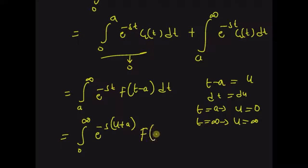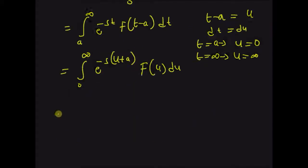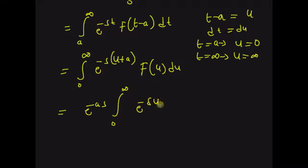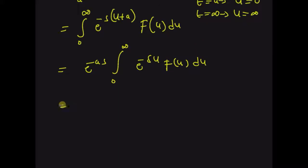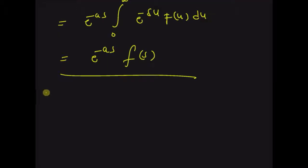This is equal to e^(-as) by simply bringing e^(-as) outside the integral, and we are left with the integral from 0 to infinity of e^(-su) f(u) du, which by definition is the Laplace transform of the function f(u). Therefore this is equal to e^(-as) F(s), which proves the property.